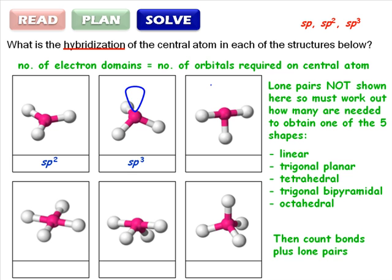However, if we add two lone pairs, the five electron domains describe a trigonal bipyramid, and require five orbitals, and hence the molecule must be sp3d hybridized.